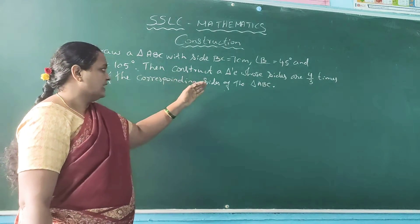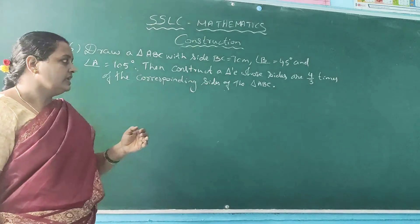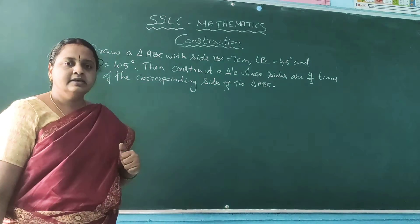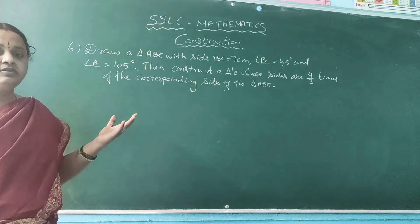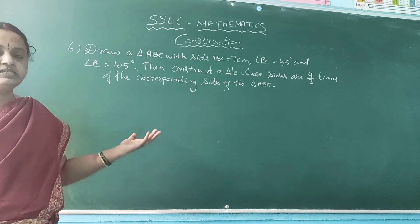Then construct a triangle whose sides are 4 by 3 times of the corresponding side of the triangle ABC. So here they have given the angle. With the given angle we should construct one triangle.